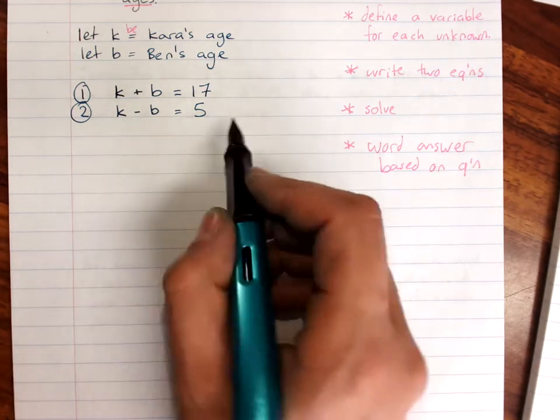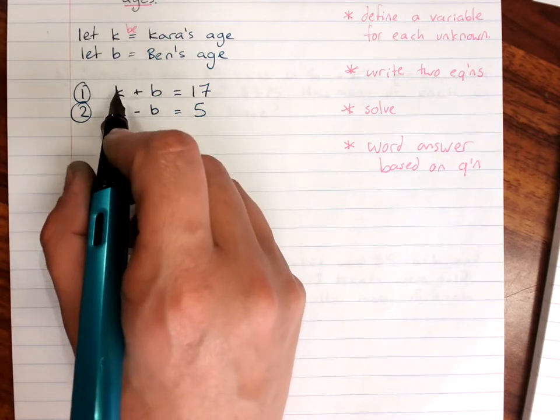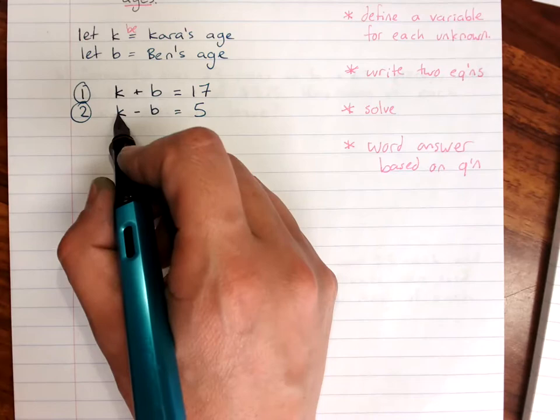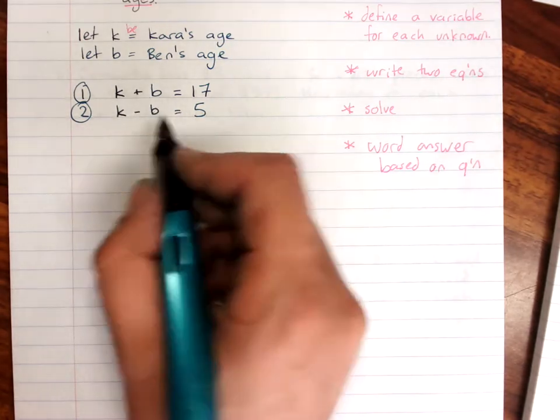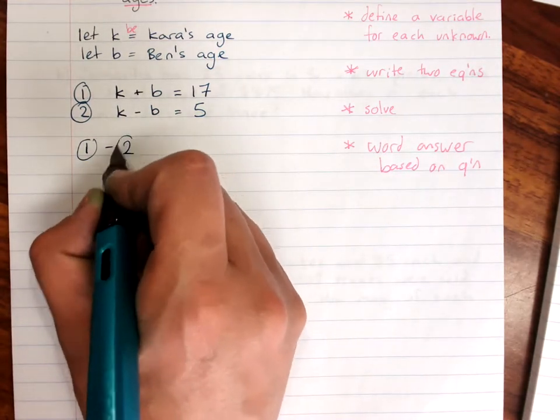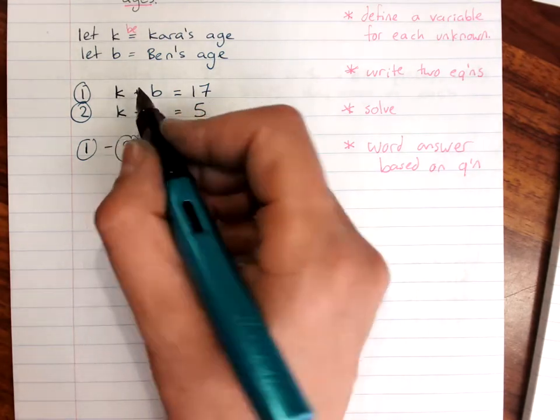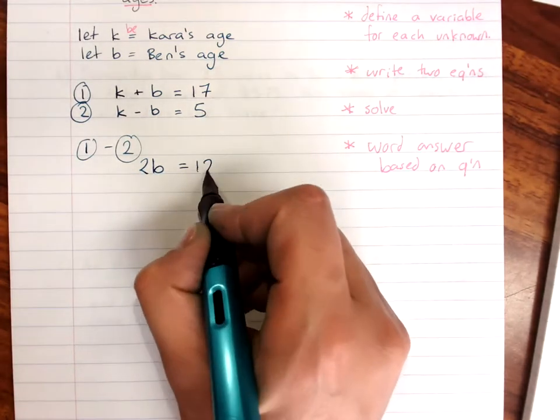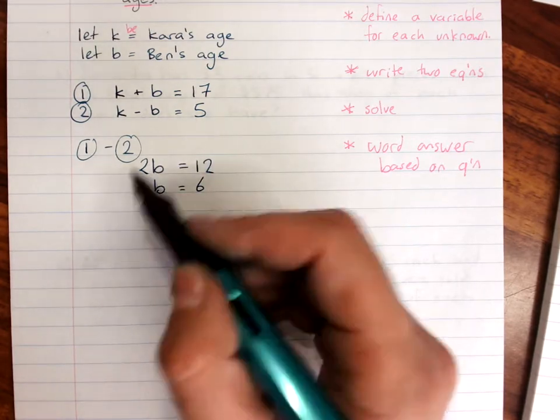So let's cancel out the k's by subtracting. Here they've got the same number at the start. They're both ones. So I could add or subtract. It wouldn't matter. I'm going to do 1 minus 2. k minus k cancels out. b minus negative b is b plus b. This is 2b. 17 minus 5 is 12. So b equals 12 divided by 2 is 6. So I know Ben's age.